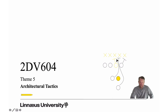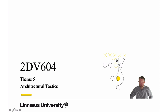Welcome to this fifth theme in 2DB604. This focuses on architecture tactics, which are behaviors that we design into our systems to address certain quality attributes. This is the first introduction lecture, and then we have one more lecture in the theme which is more of a case study where we see tactics at work.